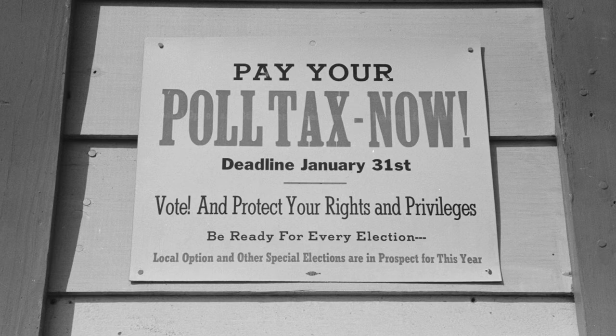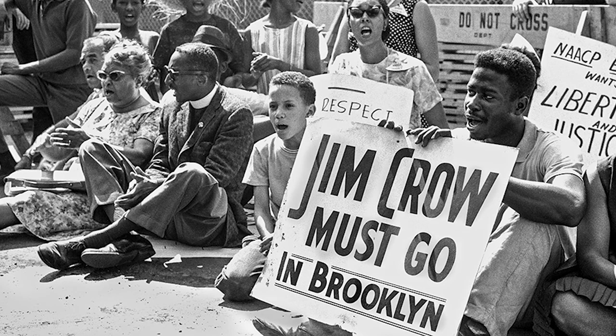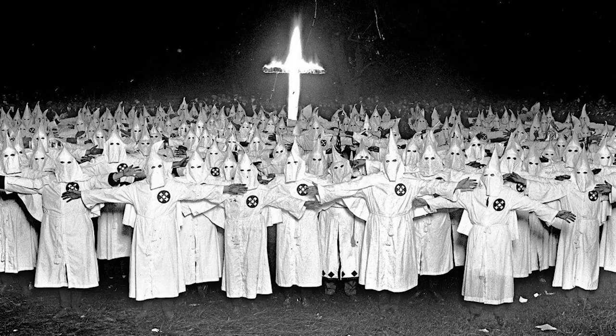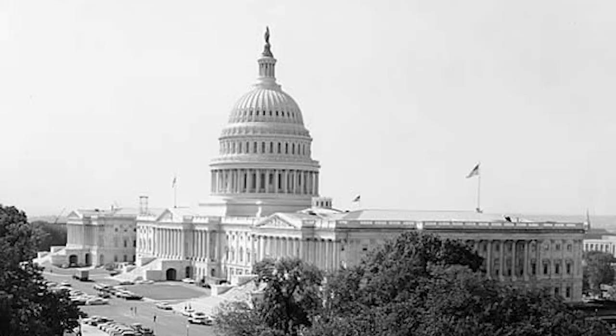They also enforced strict segregation through Jim Crow laws and condoned violence from white supremacist groups such as the Ku Klux Klan. For decades after Reconstruction, the U.S. Congress did not pass a single Civil Rights Act. Finally, in 1957, it established a Civil Rights Section for the Justice Department, along with a Commission of Civil Rights to investigate discriminatory conditions.